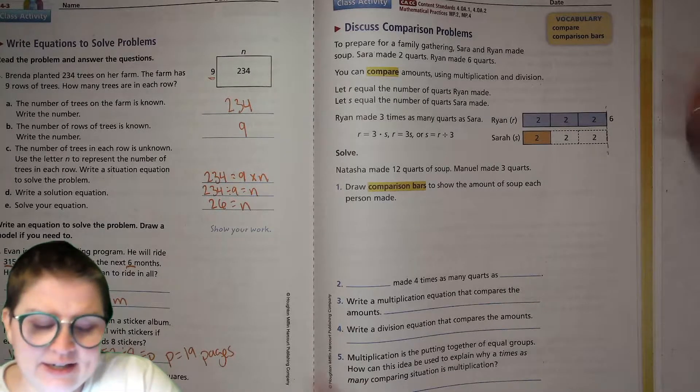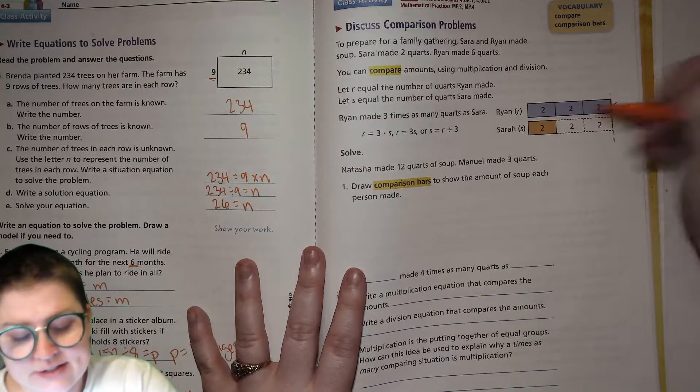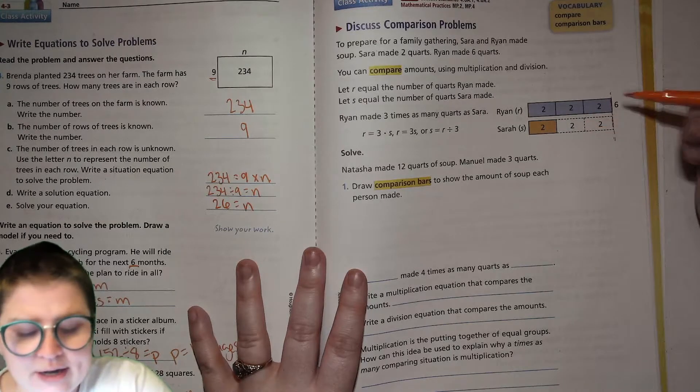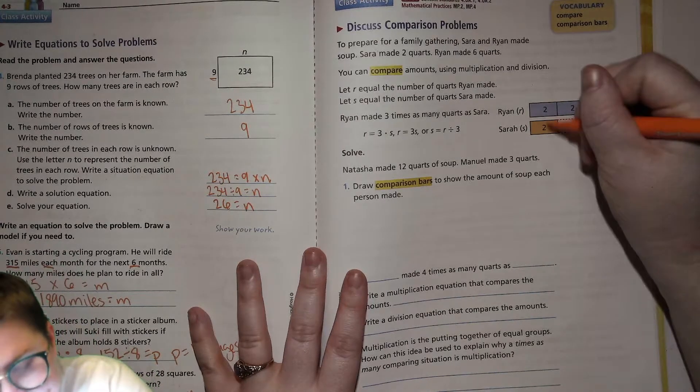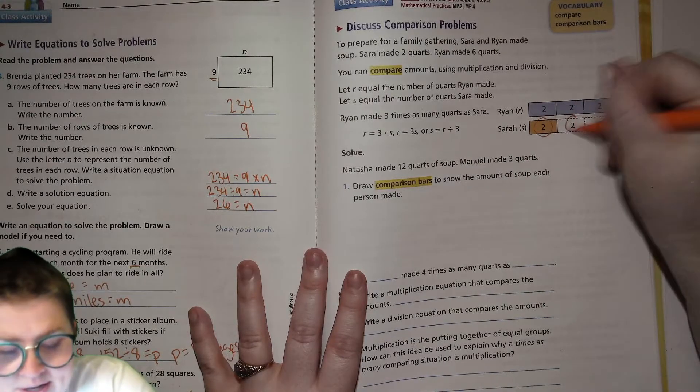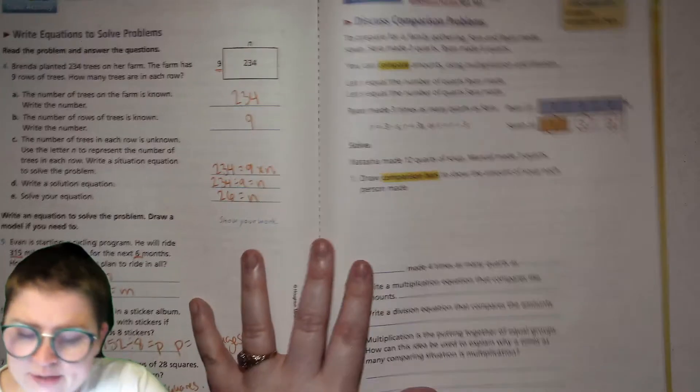So, the difference, if you wanted to find the difference, you would do six minus two, and you get four. But if you're trying to see how many of Sarah's amount, Sarah's amount was two, and there are three twos that would equal Ryan's six.